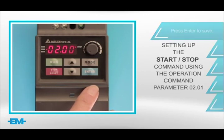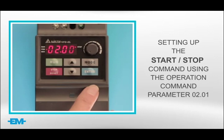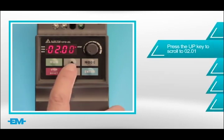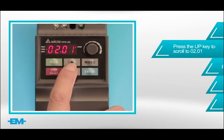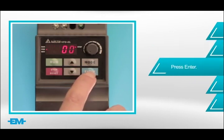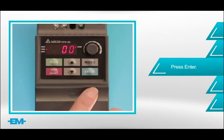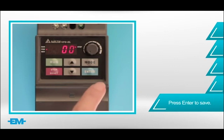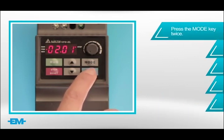Secondly, we are going to set up start-stop command from the keypad using the operation command parameter 02.01. Press the up key to scroll to 02.01 and press enter. The drive will show either 0 or 1. Change this setting to 0, which is the digital keypad, and then press enter. Press mode twice to return to the operation screen.